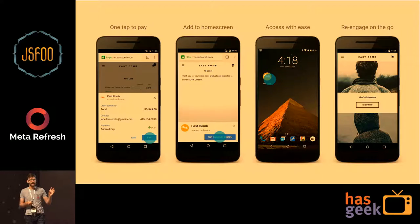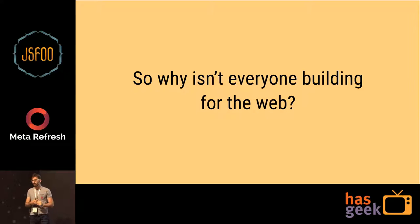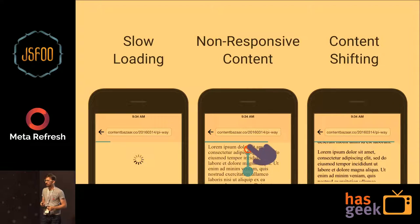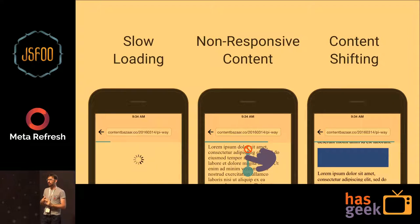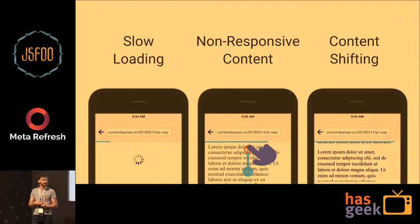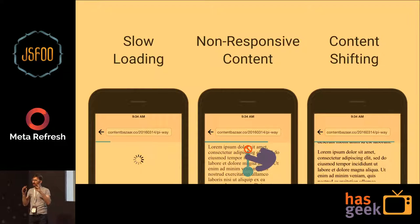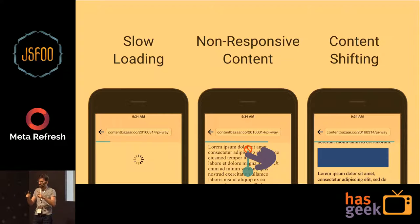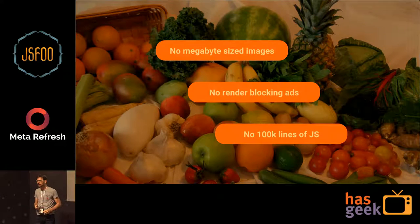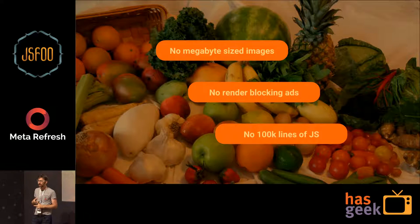How we implement that journey is a completely different story. Why isn't everyone building this for the web? The problems holding us back include slow-loading, non-responsive content — especially content shifting, which I really hate. When an image loads and jumps a paragraph around so you can't read anymore. The solution: no megabyte-sized images, no random bloated ads, no 100K lines of JavaScript.